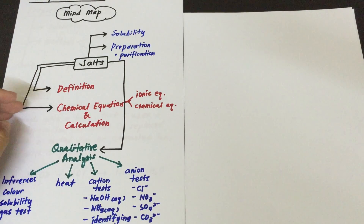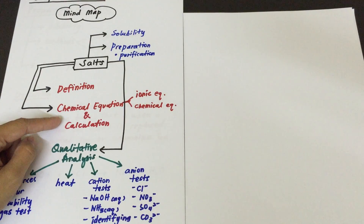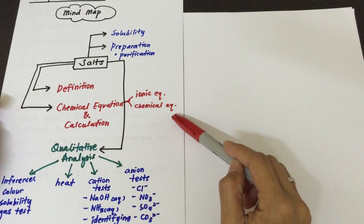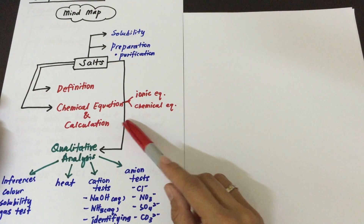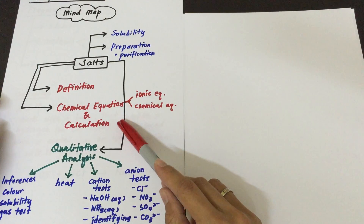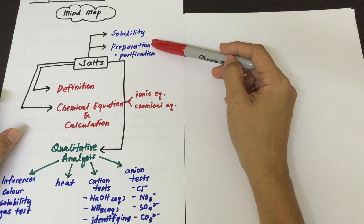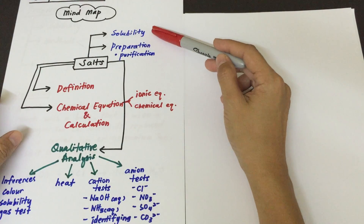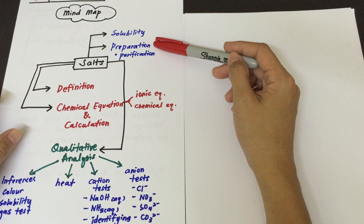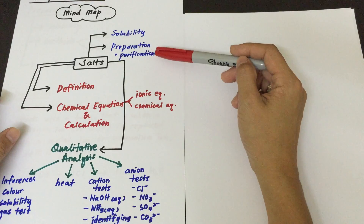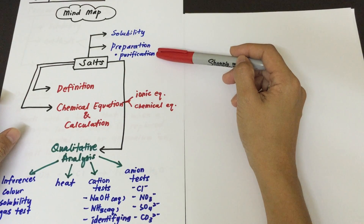After we know about the definition, there is another sub-topic on the construction of chemical equations involving ionic equations and chemical equations. From there, we will need to understand stoichiometric calculations involving salt formation. Then we go on to the solubility of different salts and also the preparation of salt based on its solubility — whether it is a soluble or insoluble salt — followed by purification of the salt prepared.